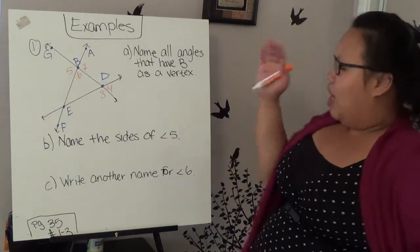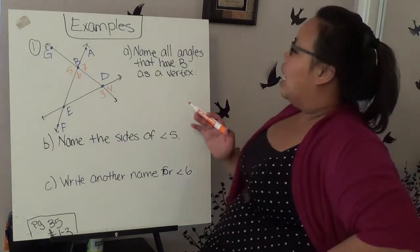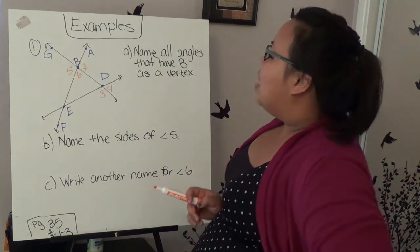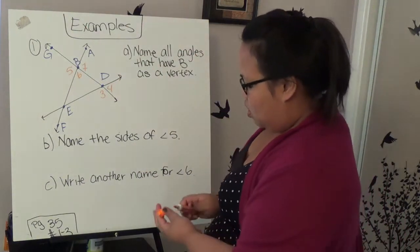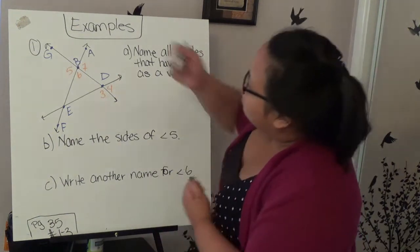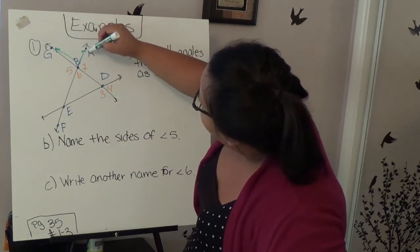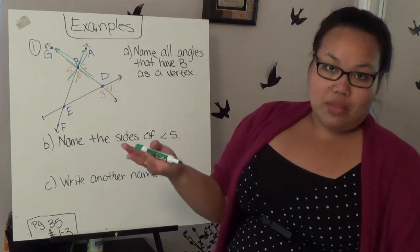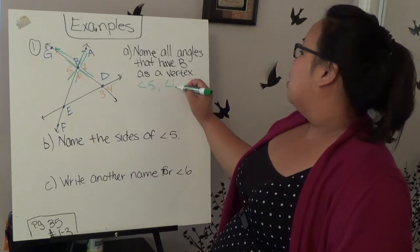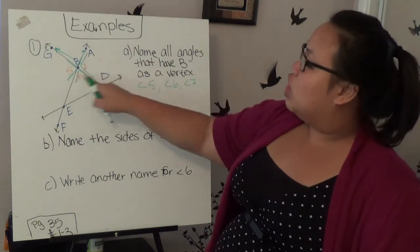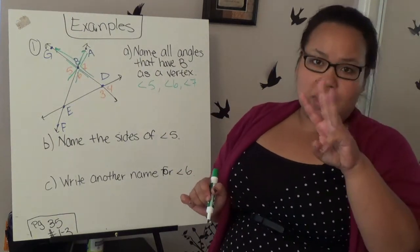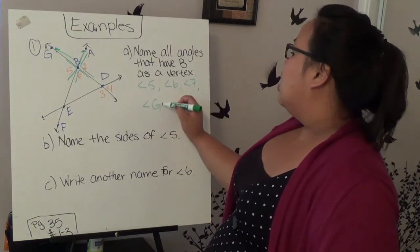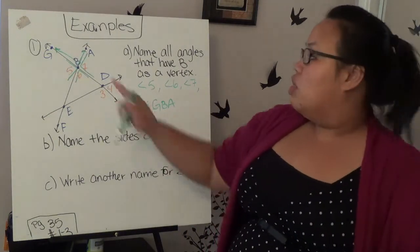Now we're going to do examples. In this case, it's asking us to name all angles that have B as a vertex. So we're going to name the angles that have B. If you see, there are four angles. Here's an angle right here, here's one, here's one, and here's one. So now we have to name all four of those angles. These three are pretty easy because I can just name them by the numbers. So I can say angle 5, angle 6, and angle 7. Because this vertex shares with four different angles, I can't call this angle B. So I have to use the three letters. The last one would be angle GBA, or I can say ABG, as long as the vertex is in the middle.